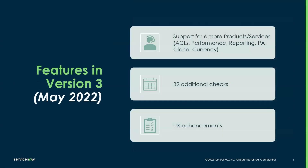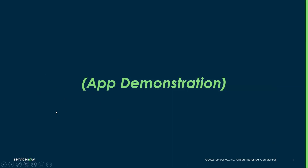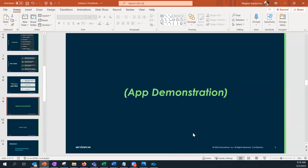Currently we're on version 3, released about a month ago. Version 2 was last summer, and version 1 launched in February of last year. In version 3, we added support for six additional products and services — now about 19 total — plus 32 additional checks, and some UX enhancements based on customer feedback. I'll now go to the demo.